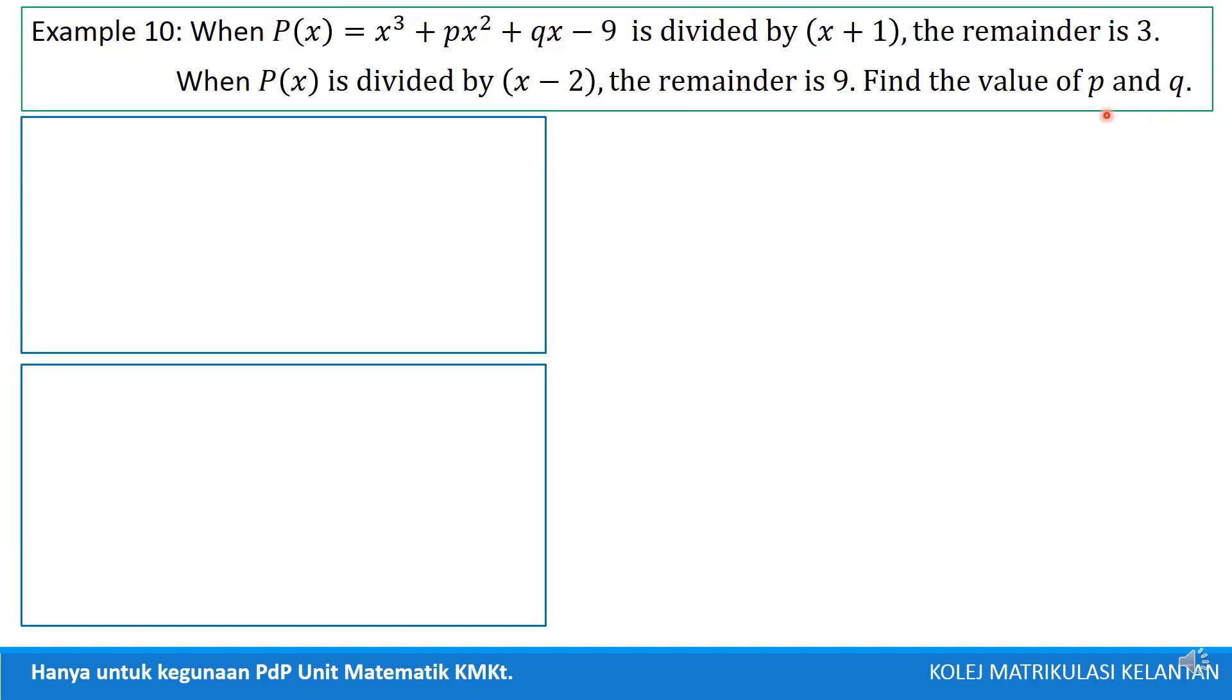Since we have to find 2 unknown, meaning we should have 2 equations. So, that 2 equations must be from these 2 information. First information is divided by x plus 1, the remainder is 3. So, we will use remainder theorem.